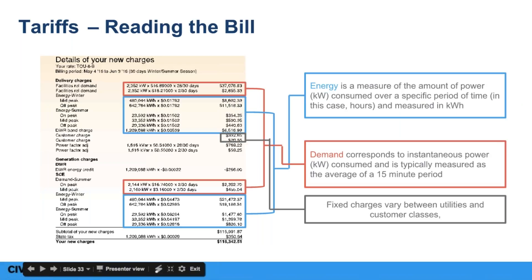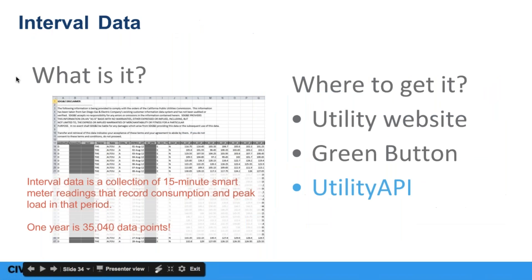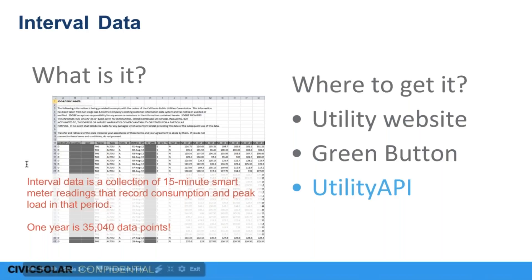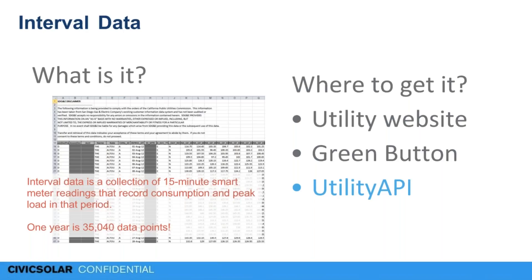Looking at the utility bill: energy is measured in kilowatt-hours and demand is measured in kilowatts. Interval data — those 15-minute billing periods — reports the customer's peak demand during each period. When you download this data, it will be more than 35,000 data points assuming 15-minute intervals. You can get it from a number of places, but Utility API is by far the easiest, particularly here in California. If your customer doesn't have a smart meter — coverage is good in California but not everywhere like Hawaii — you'll need to install your own meter to collect interval data.